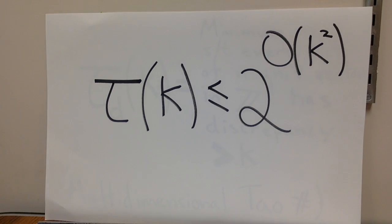A consequence of the way Tao proved his result, and I believe this is correct, is that tau of k is actually bounded above by an exponential function, two to the order k squared. By order k squared, I mean some number times k squared appears in the exponent above the two.